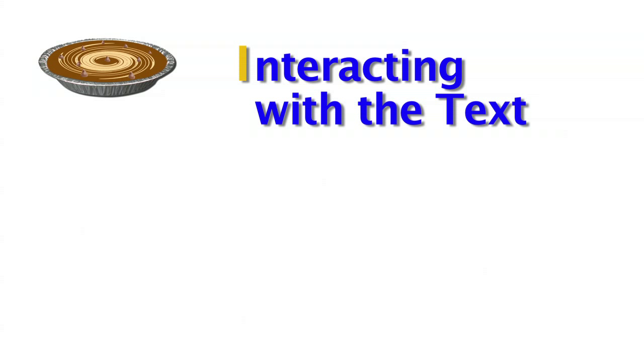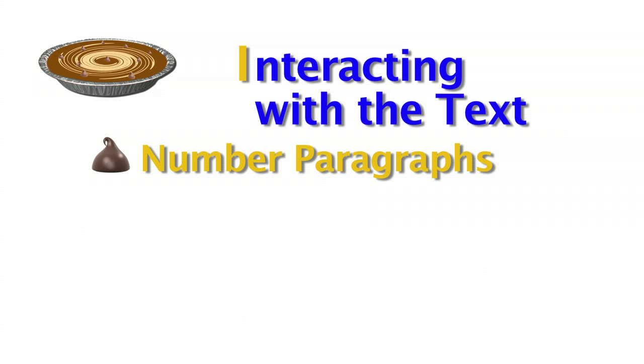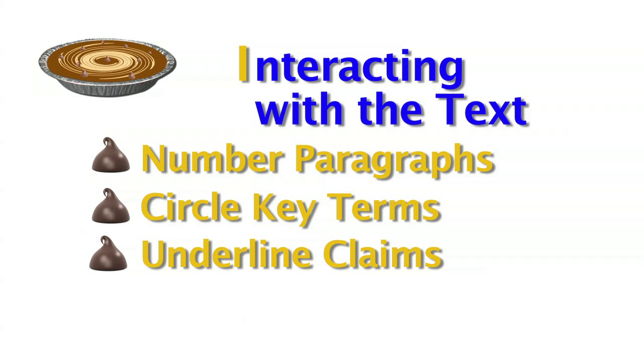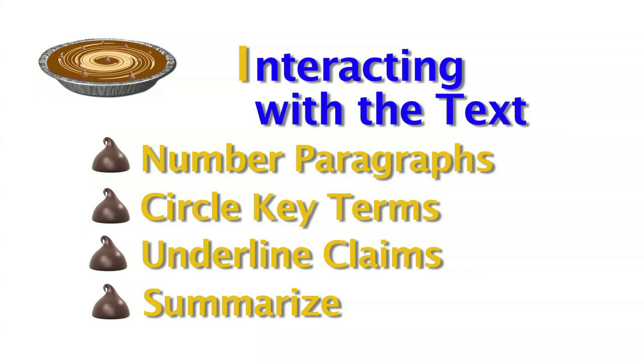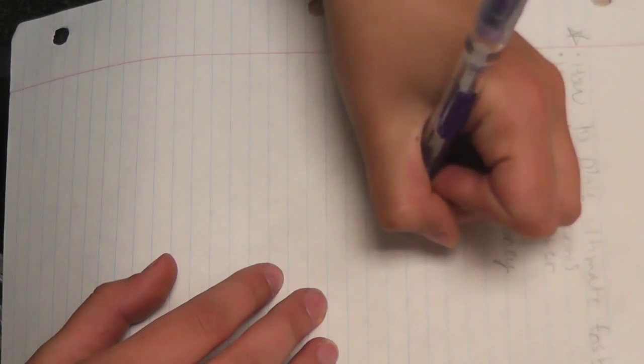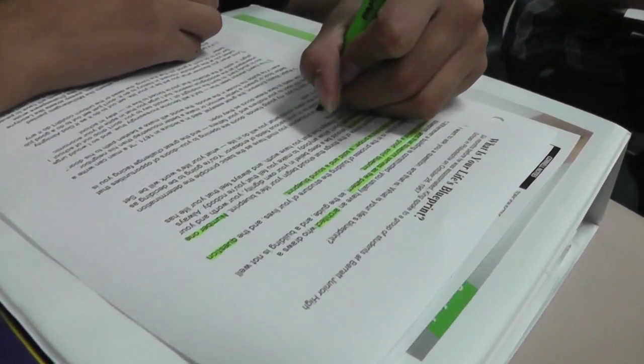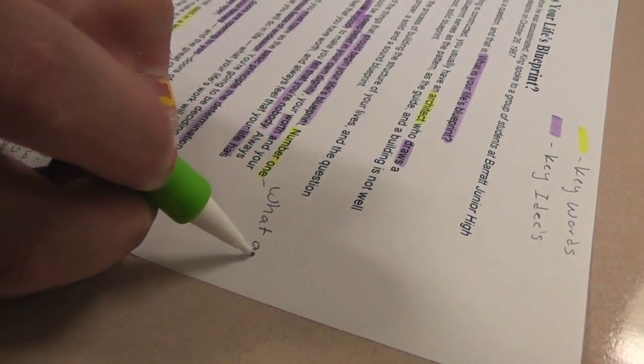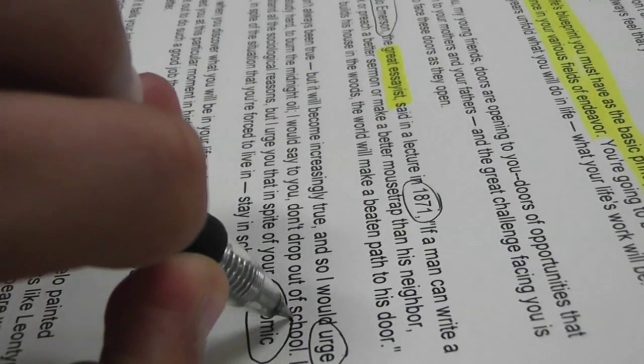Interacting with the text covers a broad array of things. We number our paragraphs before we read, circle key terms, underline the author's claims, and summarize right on the article in about 20 or 25 words the main idea. The idea of this step is that it focuses the student on the interactive process of reading and not just something they're passively doing — circling things, highlighting things, going back to underline a word that you realize was important, and writing in the margins.